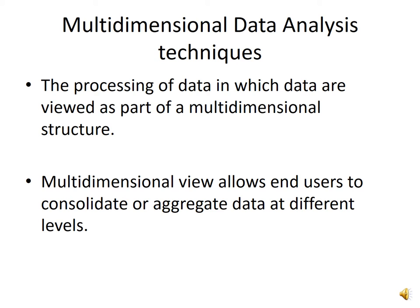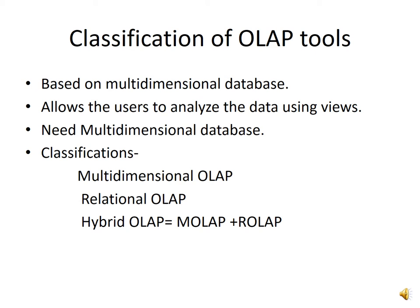The model is composed of logical groups: measures, dimensions, hierarchies, levels and attributes. Its simplicity is inherent because it defines objects that represent real-world business entities. Analysts know which business measures they are interested in, which dimensions and attributes make the data meaningful, and how the dimensions are organized into levels and hierarchies. OLAP is further classified into three main categories: Multidimensional OLAP (MOLAP), Relational OLAP (ROLAP), and Hybrid OLAP (HOLAP), which is a combination of MOLAP and ROLAP.